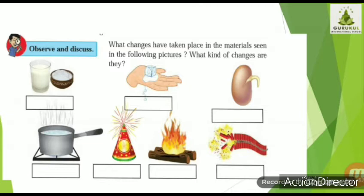In the second picture, ice is melting and forming water. This is a physical change — only the state of the substance is being changed. From water we can obtain ice again, and from ice we can obtain water, so this is a reversible change. In the third picture, a seed is sprouting — we can call it a natural change, not man-made, as it happens naturally.